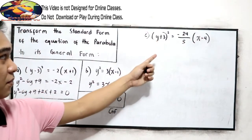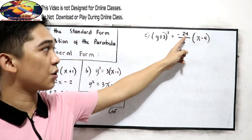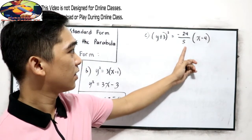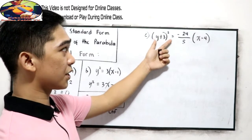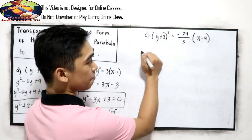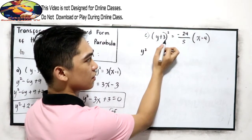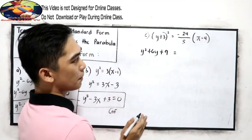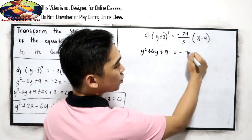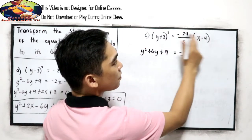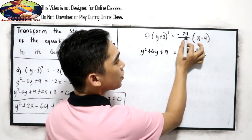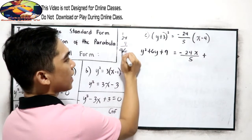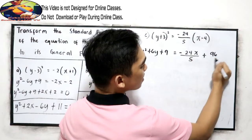Our last example: the quantity (y plus 3) squared is equal to negative 24 over 5 times the quantity (x minus 4). We have a fraction with 5. Let us expand the quantity (y plus 3) squared: y squared, then multiply the first and second terms times 2 giving positive 6y, and square the second term giving positive 9. On the right side, distribute: negative 24x over 5, and negative times negative gives positive 24 times 4. Multiplying: 4 times 24 is 96, so that is 96 over 5.